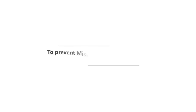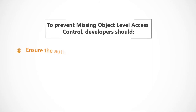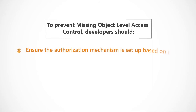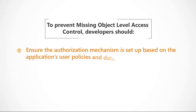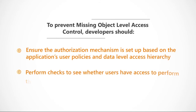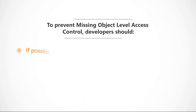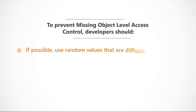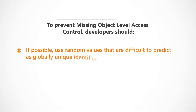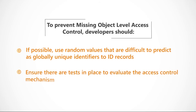To prevent missing object level access control, developers should: ensure the authorisation mechanism is set up based on the application's user policies and data level access hierarchy; perform checks to see whether users have access to perform the requested action for each function; if possible, use random values that are difficult to predict as globally unique identifiers to ID records; and ensure there are tests in place to evaluate the access control mechanism.